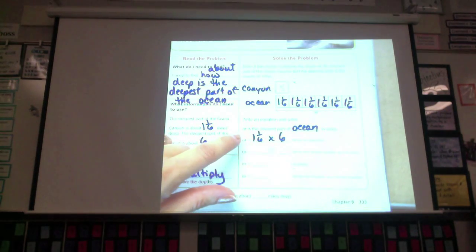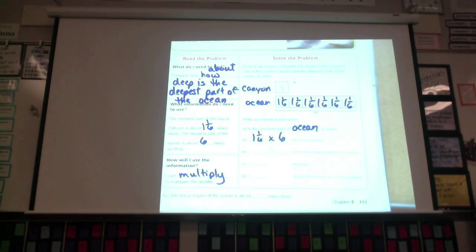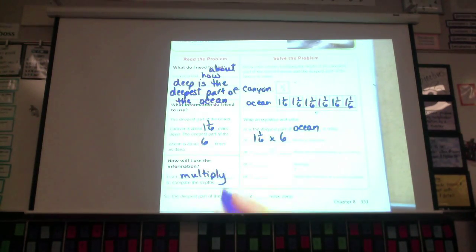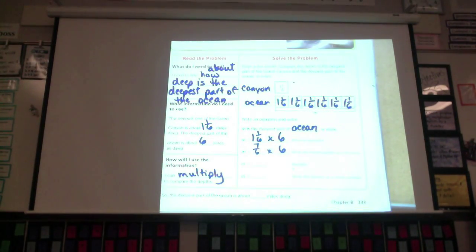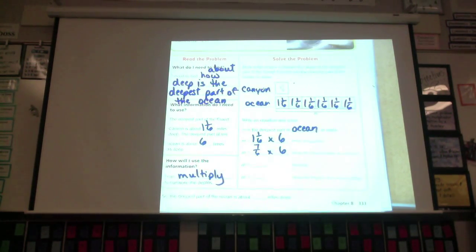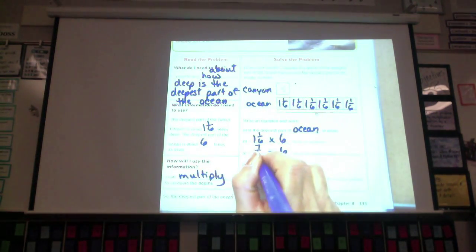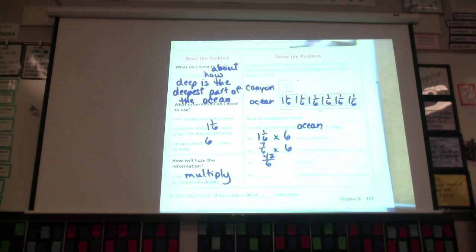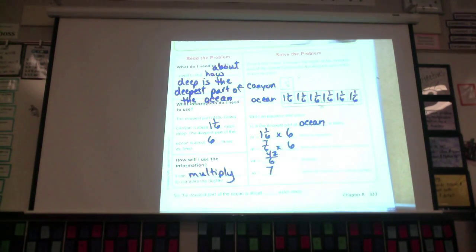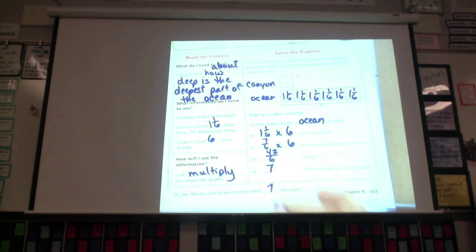I'm going to change my mixed number into an improper fraction. Go ahead and do it on your paper right now. What did you guys get as your improper fraction? Seven-sixths. Seven-sixths times six. Go ahead and multiply that now. What did you guys get as your improper fraction? Forty-two-sixths. We multiply the seven times the six. We get 42. The denominator stays the same. Now go ahead and turn this into a whole number or a mixed number. What did you guys get? Seven. Just seven by itself. So the deepest part of the ocean is about how many miles deep? Seven miles deep.